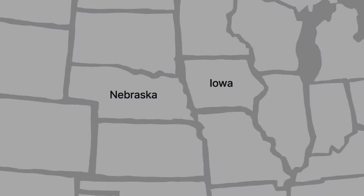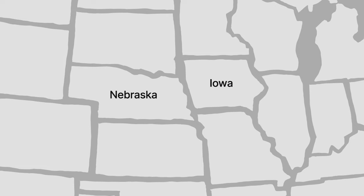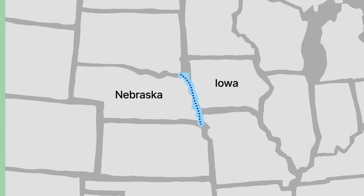Iowa lies to the east of Nebraska. The Missouri River runs between them. The boundary between the two states was initially defined as the middle of the main channel of the Missouri River.